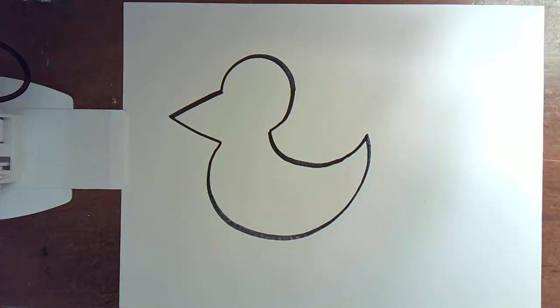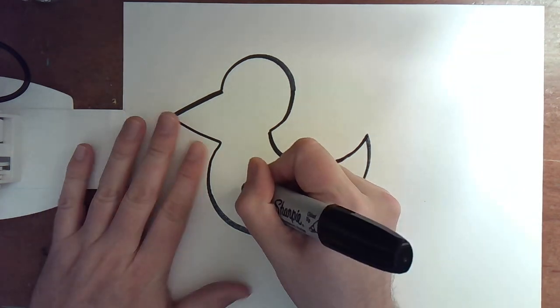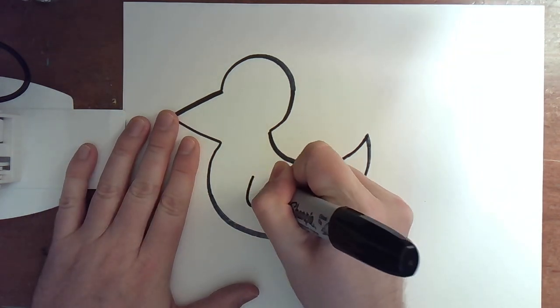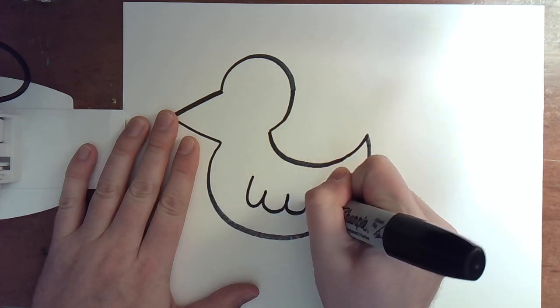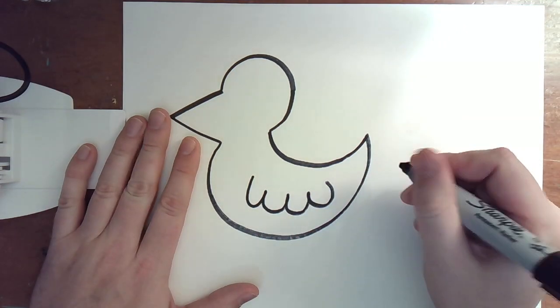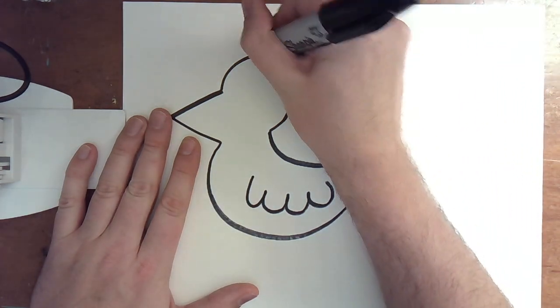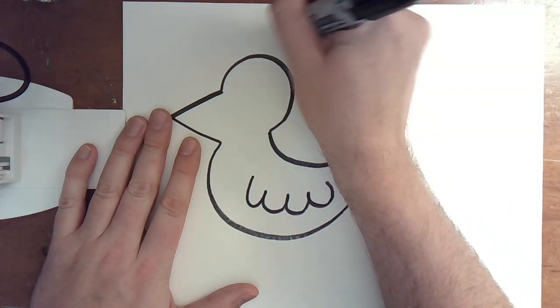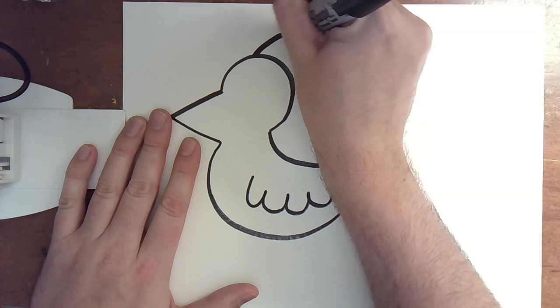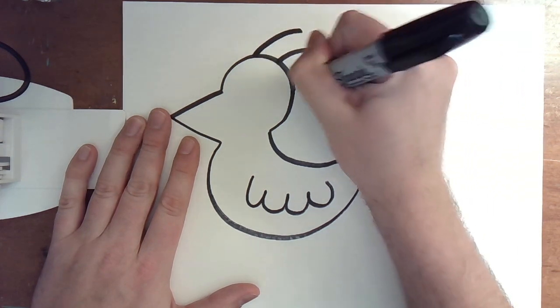That's the basic shape of our bird and what Rizzi would do for the wings is just a curvy line like this. Sorry my marker's really loud and now I'm going to do some feathers on top of the head which are just a few lines. One, two, three, four.